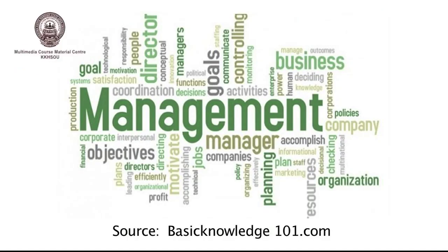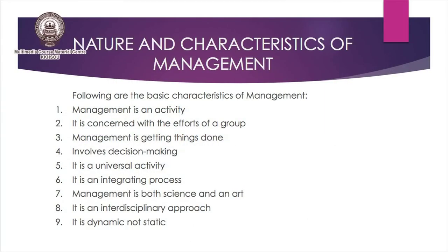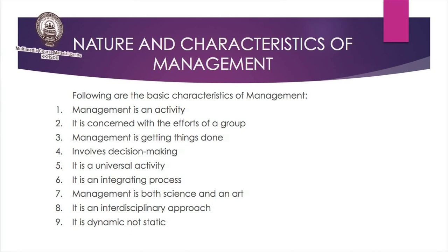From this diagram you can see management includes so many things — we need to get the outcomes, we need to decide things, we need to acquire knowledge, we need to achieve the goals. All these are part of management. Now let's discuss the nature and characteristics of management. First, management is an activity, because management is a process of organized activity which is concerned with the efficient use of resources of production. Resources may include money, material and people in the organization.